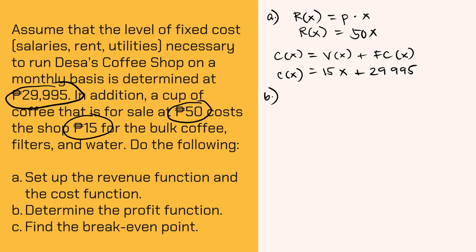Let's proceed with the profit function. Just take note of the general formula, which is P of X equals the difference of the revenue and cost. Therefore, we have P of X here equals the revenue function, which is 50X, minus the cost function, which is 15X plus P29,995. We have to write a parenthesis here because the sign will affect the terms. So we have 15X plus P29,995.